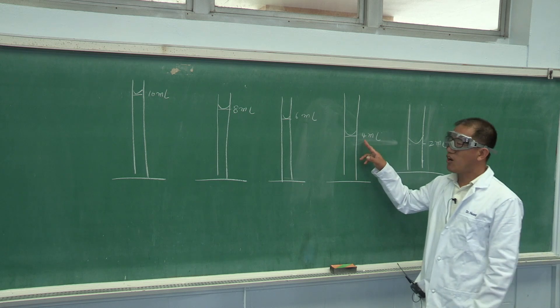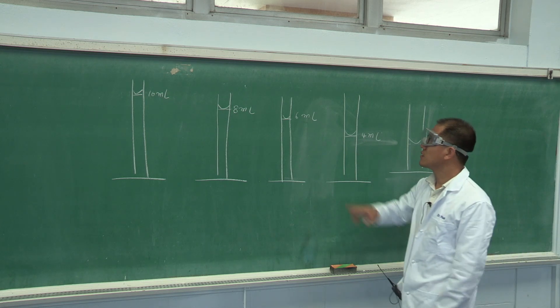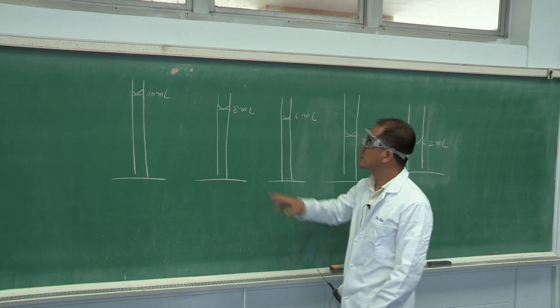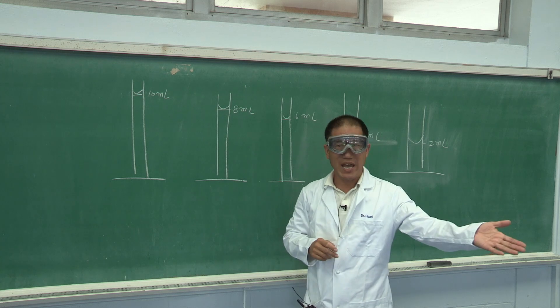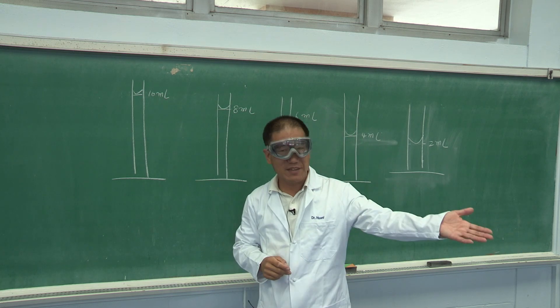Next, we will add more water to 4 milliliter mark, get the mass. Add to 6 milliliter mark, get the mass. Add to 8 milliliter mark, get the mass. Then, finally, 10 milliliter mark, get the mass.